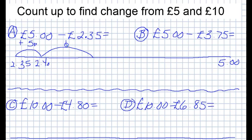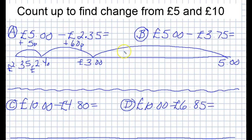So add sixty pence — that'll take me to three pounds. Now I'm at three pounds and it's pretty easy to work out that I need to go from three pounds to five pounds. I just need to add two pounds, so I can make a big jump and add two pounds, and that takes me from three to five pounds. And that's basically how you do it.